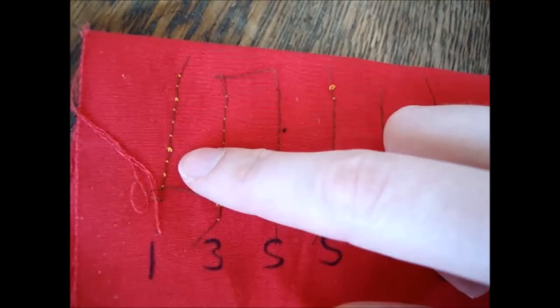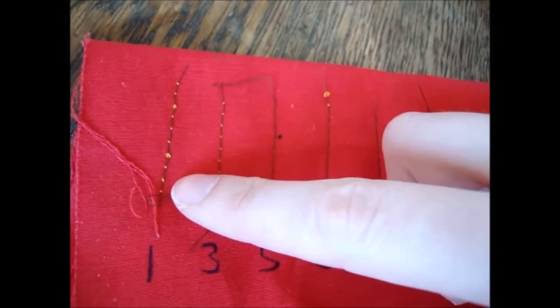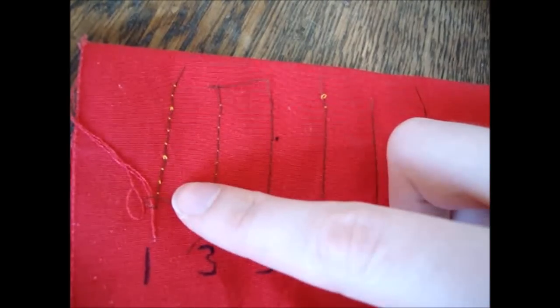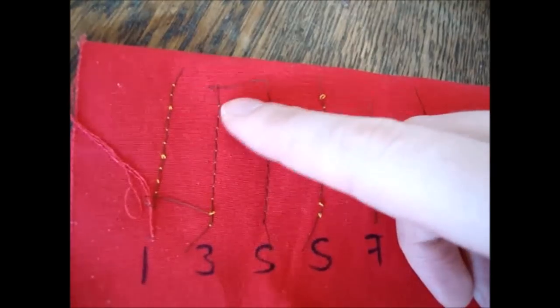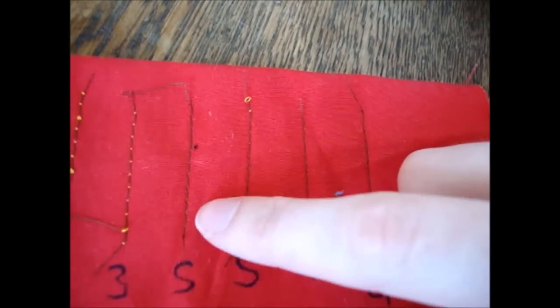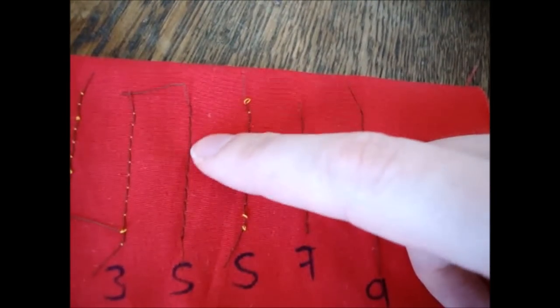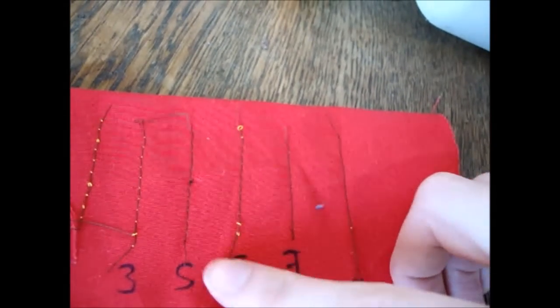So if you have these little yellow loops here from your top thread that means that your tension is too low, you need to increase it. And you can see with tension level 3 I still have quite a lot of little yellow loops there. Now if you have a look at number 5 there aren't any yellow dots here so that would seem to indicate that tension level 5 would probably be the best one to use.